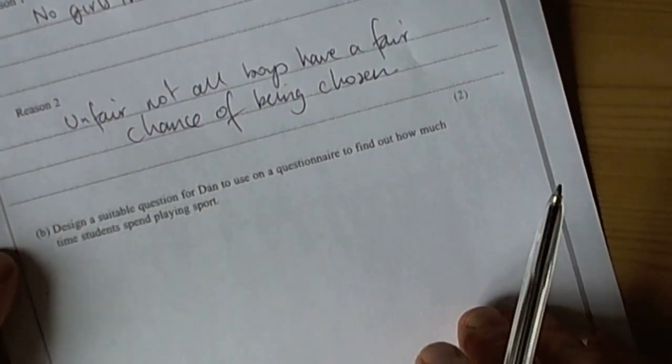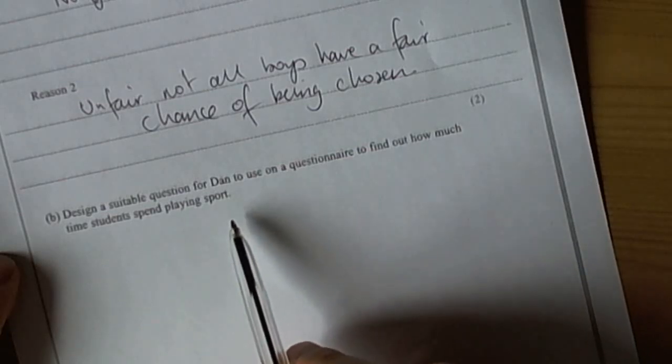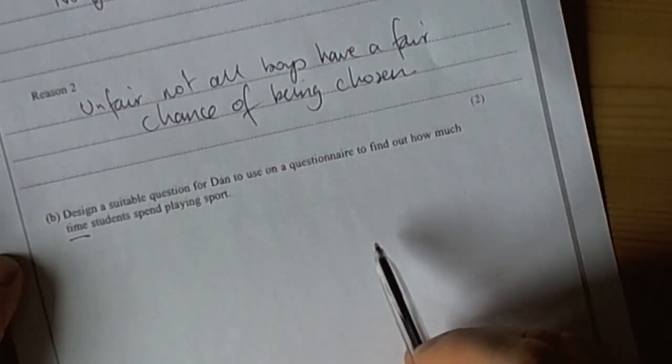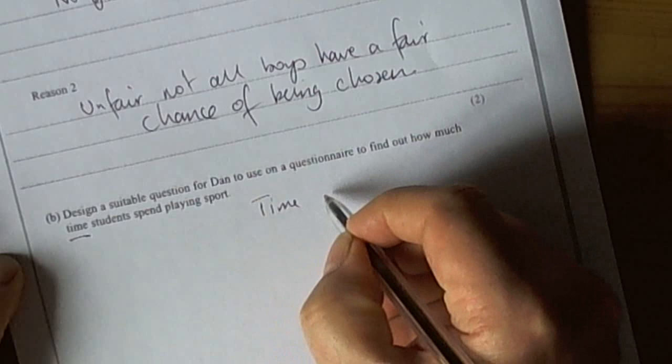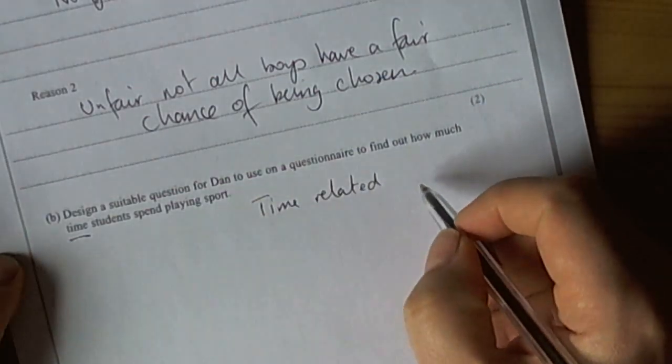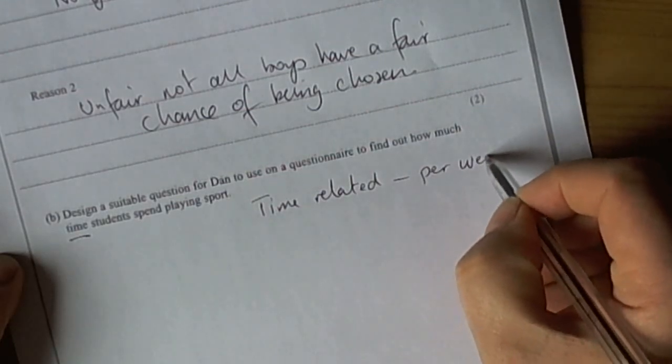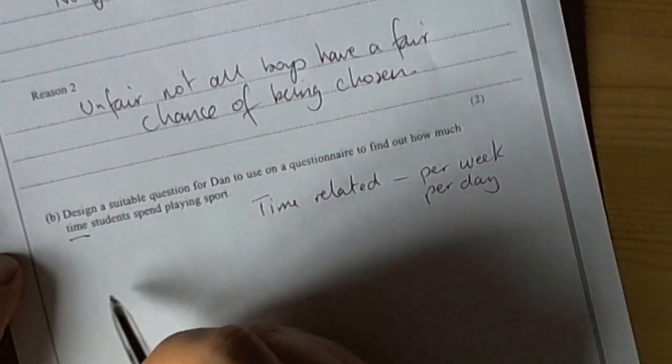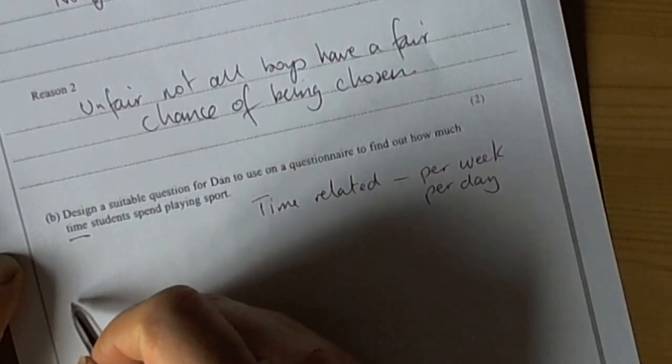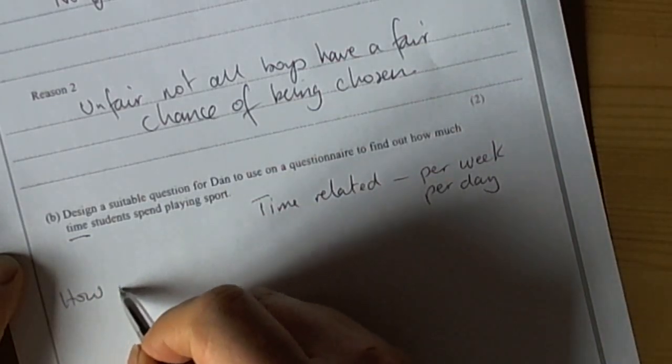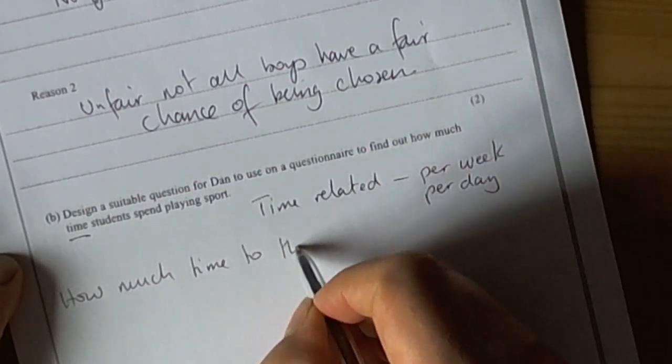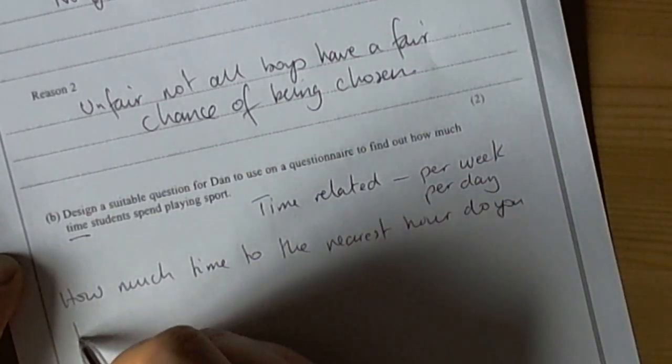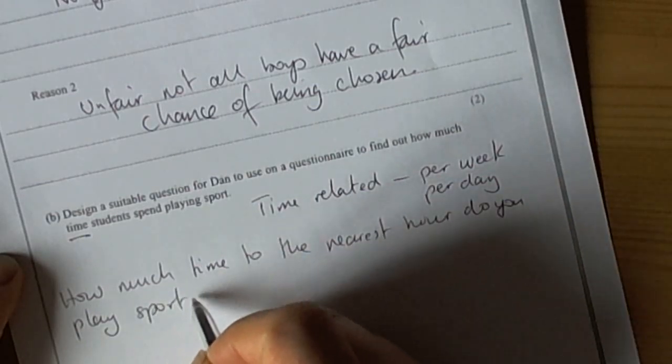The second part of the question says, design a suitable question for Dan to use on a questionnaire to find out how much time students spend playing sport. Now, the thing about designing questions is they must be time related to make it easy for somebody to reflect and look at it. So, time related means things like per week, per day. So, I think for this one it would be sensible per week. A suitable question would be something like, how much time to the nearest hour do you play sport per week.